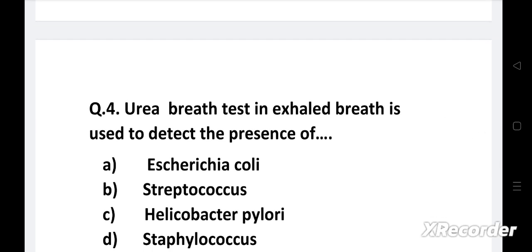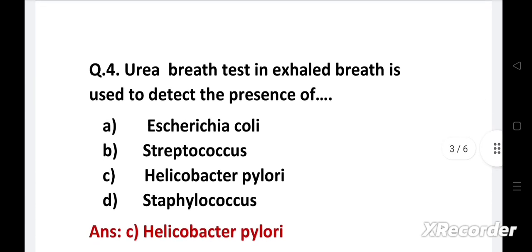Urea breath test in exhaled breath is used to detect the presence of: Option A - Escherichia coli, B - Streptococcus, C - Helicobacter pylori, D - Staphylococcus. Right answer is Option C - Helicobacter pylori.